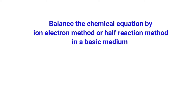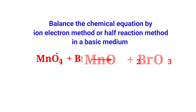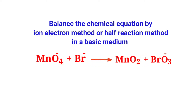Balance the chemical equation by the ion electron method, or half reaction method, in a basic medium. The equation is: permanganate ion plus bromine ion gives manganese dioxide plus bromate ion.